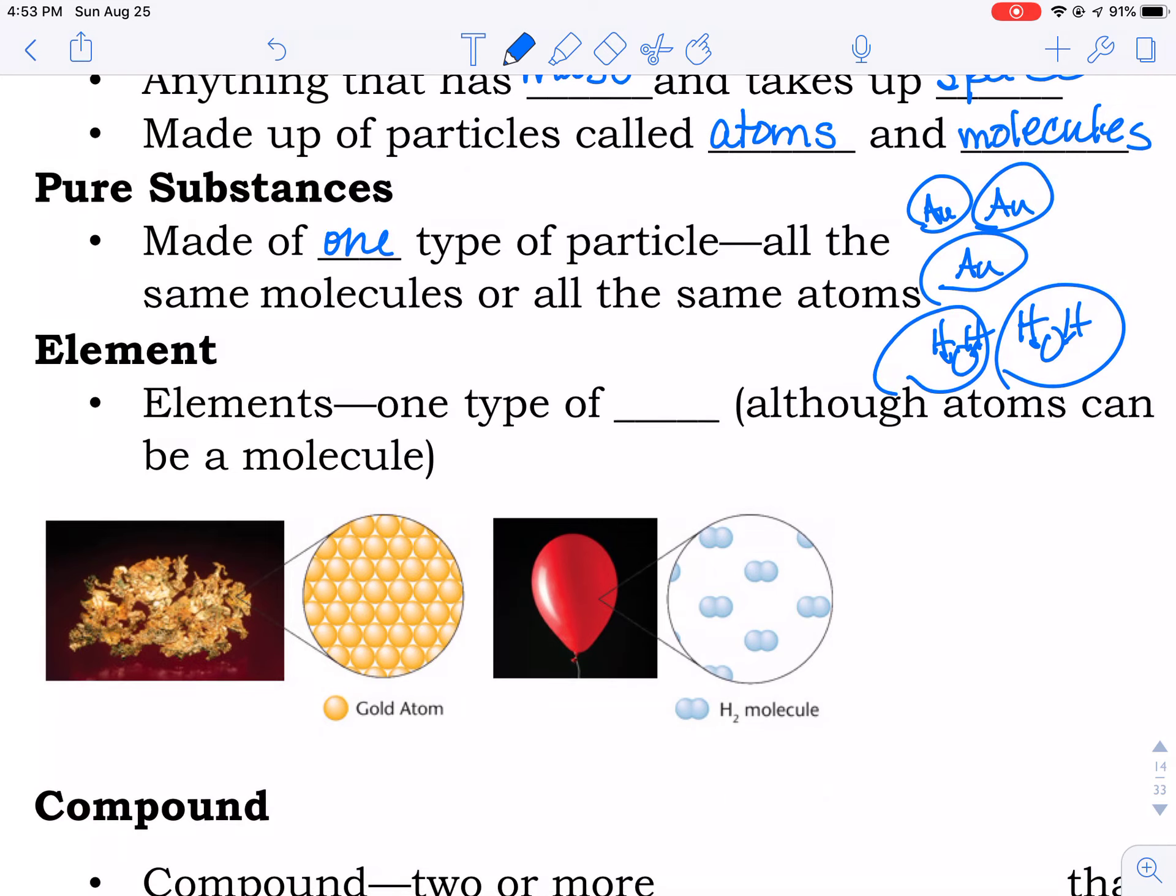When we talk about pure substances, we talk about elements. Elements are made of one type of atom. So again, my example up here with the gold. They're made of only gold atoms. Sometimes elements can be made of two of the same atom. So hydrogen would be an example.